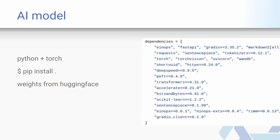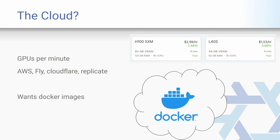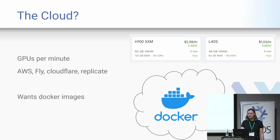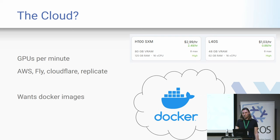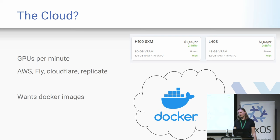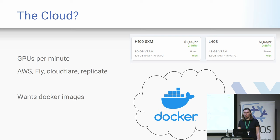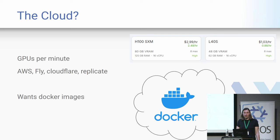Then we want to deploy this to the cloud. These things run on GPUs — very expensive GPUs. We don't want to buy one because that gets quite expensive, and you generally want to run it based on a user action. Fortunately, there are companies where you can rent GPUs by the minute. You can rent an H100 GPU for $3 per hour. Of course you don't want it on all day if it's not necessary, but you also want it to start fast so you can respond to user input quickly. All of these clouds work with Docker images, sadly. It's the standard, so it makes sense, but I don't like it.